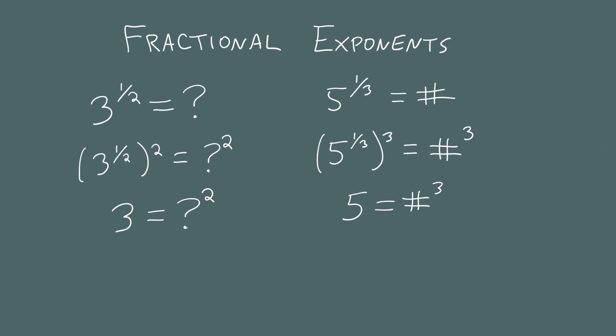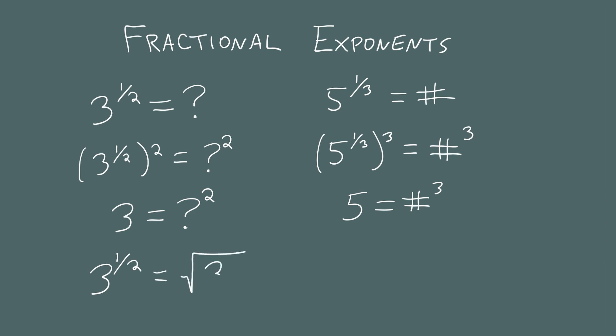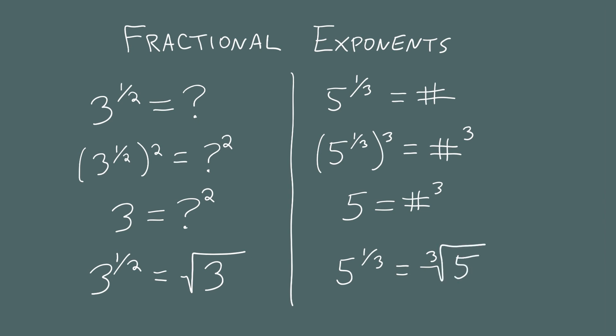And this brings us to the idea of radicals — just a different way of writing fractional exponents. It's just notation. So 3 to the 1 half power can alternatively be written using the radical symbol: this funky symbol is called the radical symbol. It means some number that, when squared, gives you 3. Similarly, 5 to the 1 third can be written with a little 3 on top of the radical symbol. Why didn't we put a 2 here? You could, but because the denominator 2 is so common, people leave it off.